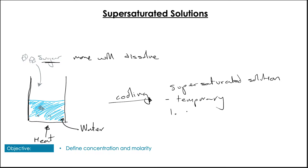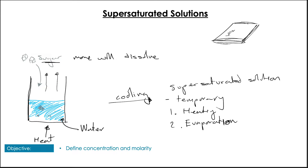Supersaturated solutions have certain characteristics — they are temporary and don't last very long. You can create them by heating or by evaporating some of the water off. One place you might have encountered these is heat packs used in sport. When you click one, it usually contains a supersaturated solution of sodium acetate, which undergoes an exothermic reaction as crystals form and drop out of solution. You can heat it back up and it will return to solution if it's a reusable one.